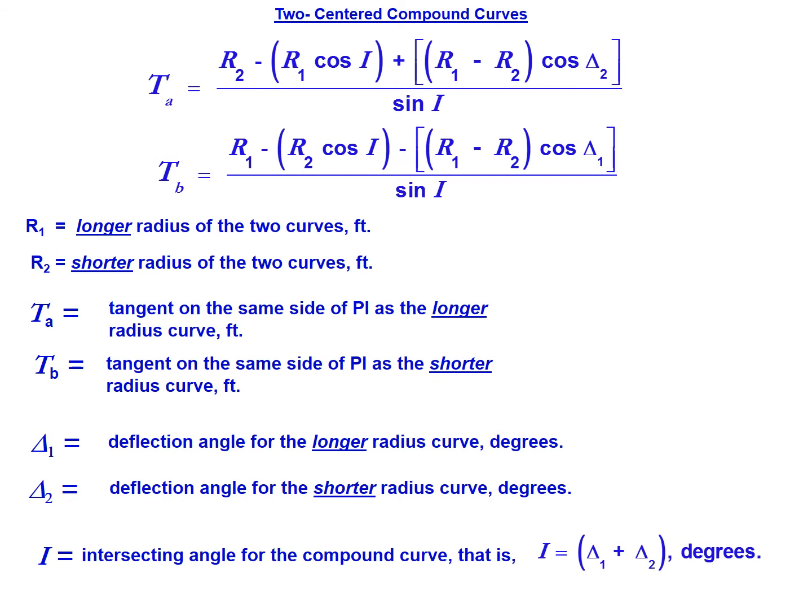Calculating T sub A and T sub B are common sources of error, so I highly recommend solving these incrementally, solving within each set of parentheses to reach a final value. T sub A equals R2 minus R1 times the cosine of the intersecting angle, plus R1 minus R2 multiplied by the cosine of delta 2, all divided by the sine of the intersecting angle.